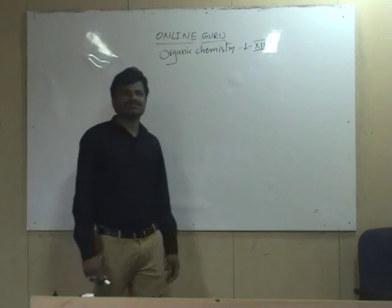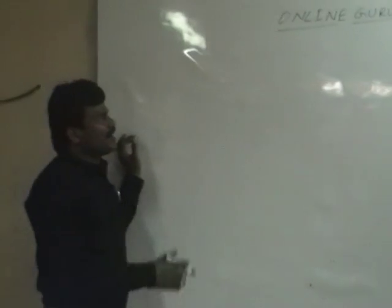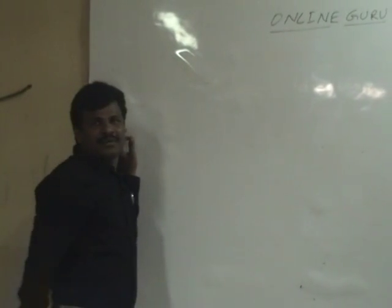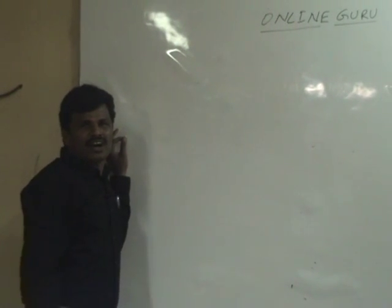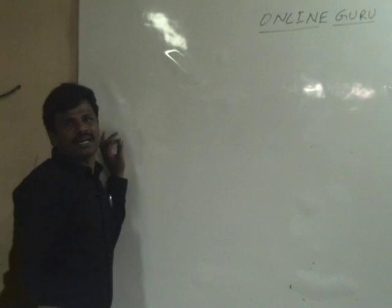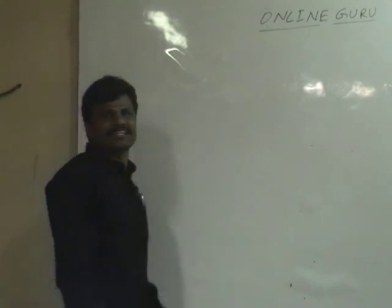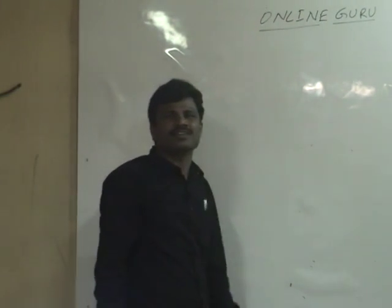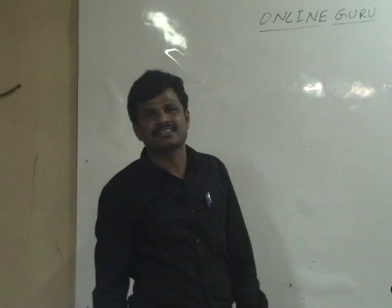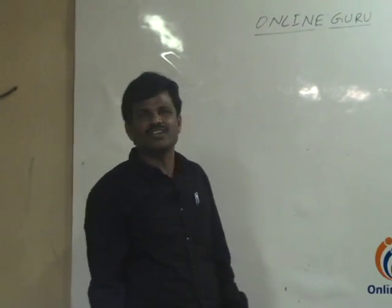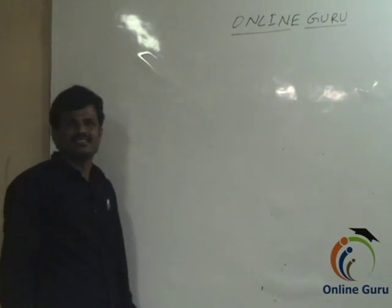Hi, I am Adarsh, I am chemistry faculty. Today we will discuss hybridization for ions. Ions are of two types: positive ions and negative ions. Positive ions are called cations and negative ions are called anions.